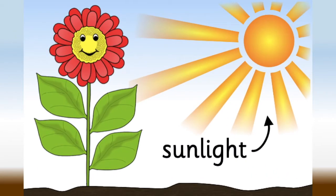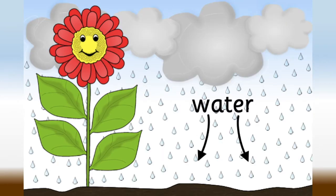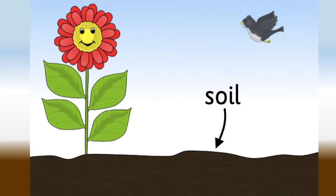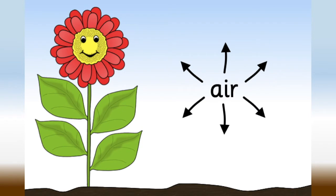Plants make their own food using sunlight. Plants need water to help them grow and stay healthy, just like us. Without water, plants would dry up and die. Plants need soil because as they grow, the roots hold onto the soil to keep the plant still. Plants also get a lot of nutrients and water from the soil to help them grow and be healthy. Plants breathe in and out through their leaves, so they need air.